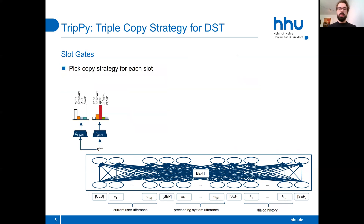Slot gates determine whether a slot is present in the current turn. They predict none if the slot does not take a value in this turn. Don't care is predicted if any value seems acceptable. Otherwise, the slot gate predicts span if the value can be extracted via span prediction; inform if the user refers to a value that was uttered by the system; or refer if the user refers to a value that is already assigned to a different slot. Boolean slots have separate slot gates.